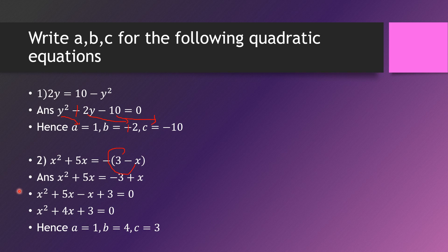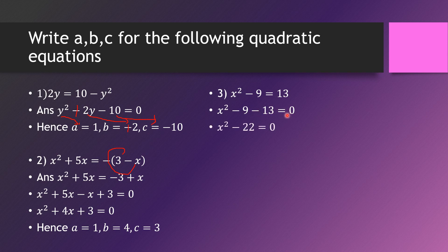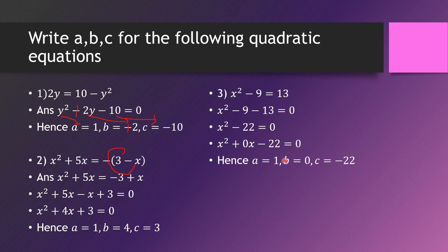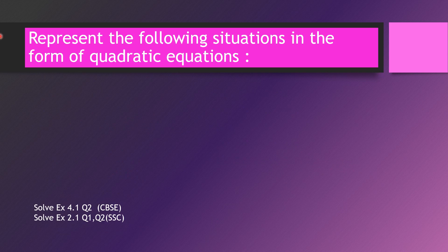Next: x squared minus 9 equals 13. Rearranging gives x squared minus 22 equals 0. Writing in standard form — since there is no x term, we write it as x squared plus 0x minus 22 equals 0. Hence a equals 1, b equals 0, c equals minus 22.